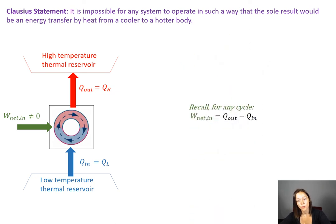And because for any cycle, the work net in has to be equal to the Q net out, which in this case is Q H minus Q L, it tells you that Q H and Q L cannot be equal to one another because the work net in cannot be equal to zero.